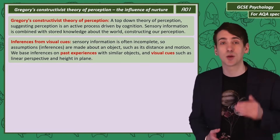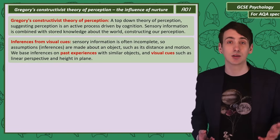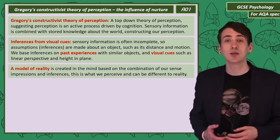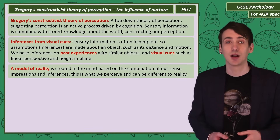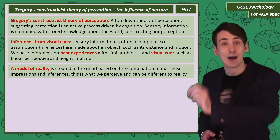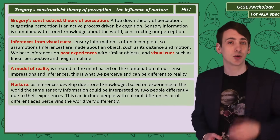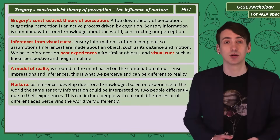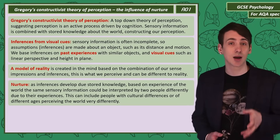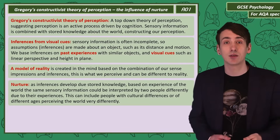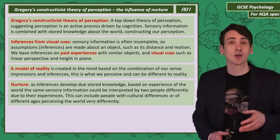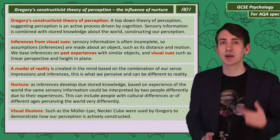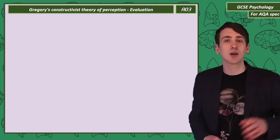Inside our mind we create what is called a model of reality. This is what we perceive and is influenced by a range of factors, and it is different from what's really out there in the world. Gregory's theory takes a nurture approach to explain perception — we make inferences based on the experiences we've had with the world, so the same sensory information can be interpreted very differently by two people with different cultural experiences. Gregory used visual illusions like the Muller-Lyer to demonstrate his ideas, as they're good examples of how the brain has to make assumptions based on limited information.